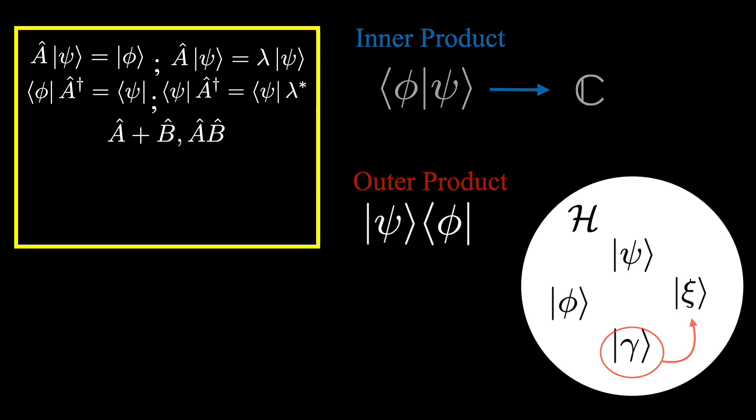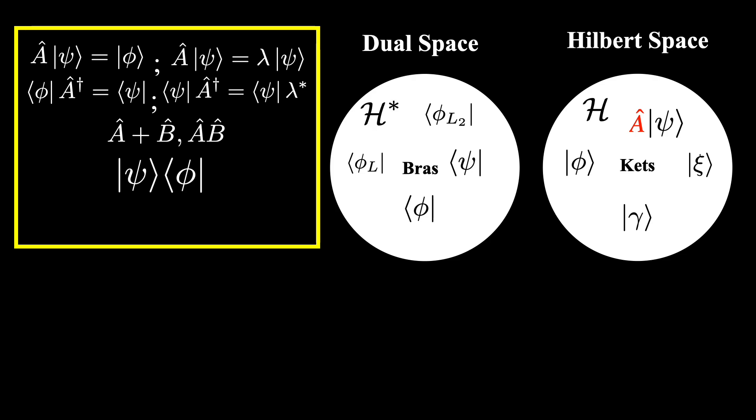Now we'll finish by using what we have learned so far to produce a very useful expression relating operators, bras, and kets. We'll begin by applying an operator A to a ket. Remember, this will just produce another ket, so we can apply a bra to this new ket to form an inner product. And we can write it in a more compact notation as follows.